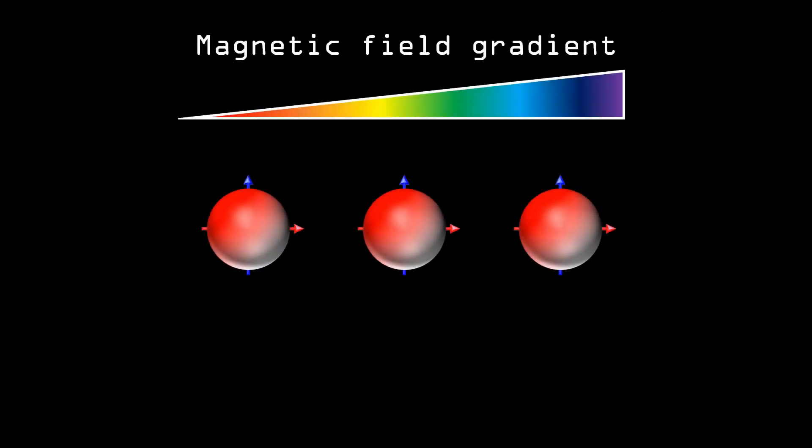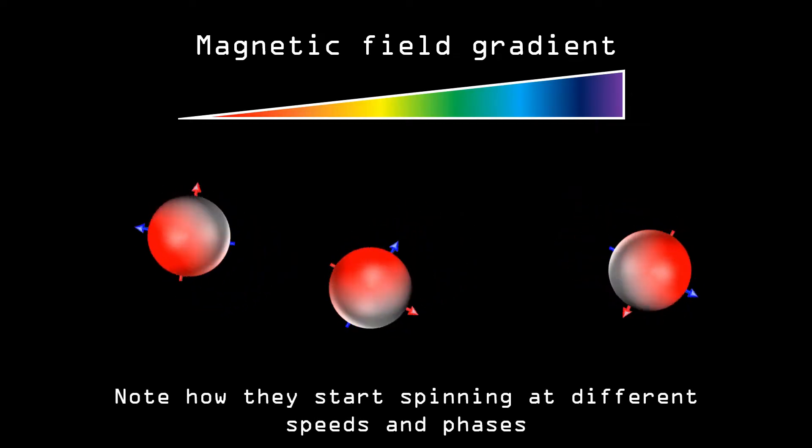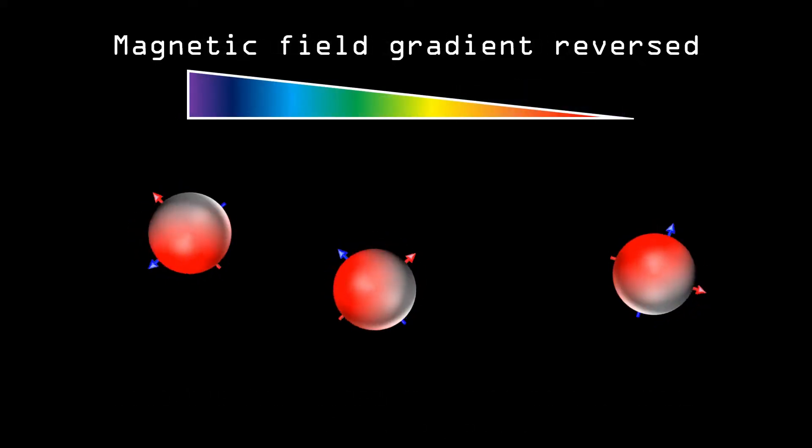Now this example is only true if hydrogen atoms wouldn't move, but of course in reality, they do move. In that situation, just as in the first example, the first gradient would cause the protons to spin differently from each other. But because the protons are moving, the second gradient will not have the same effect as the first.